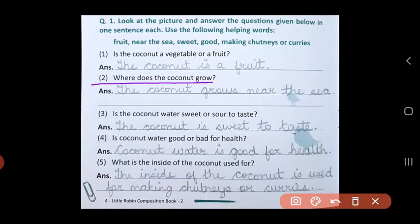Now we are given some helping words: fruit, near the sea, sweet, good, making chutneys or curries. Using these helping words let us answer the questions below.